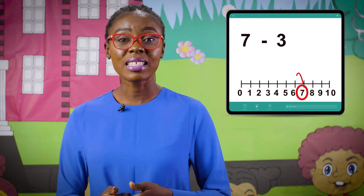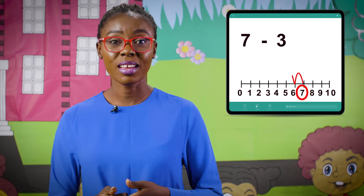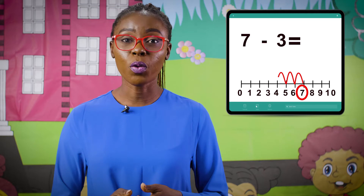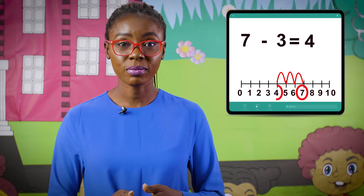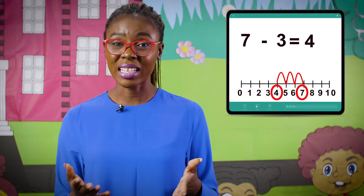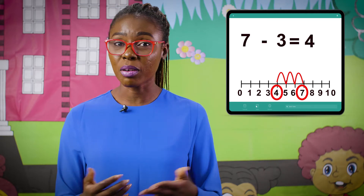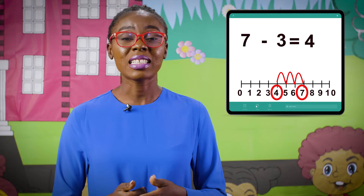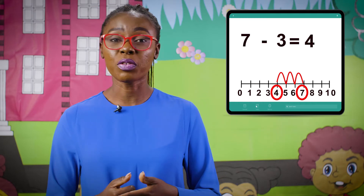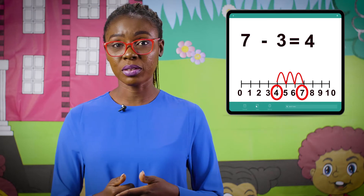Let's count together: seven, six, five, four. Remember — identify the bigger number and count back for the number of steps of the smaller number.